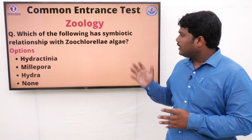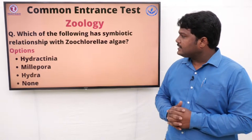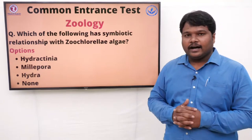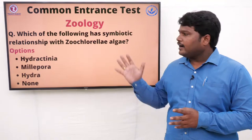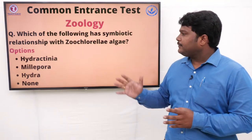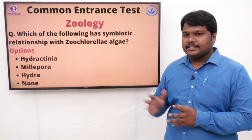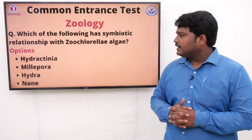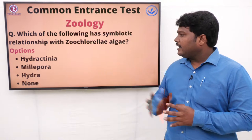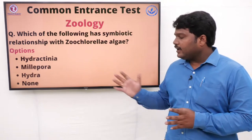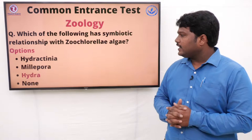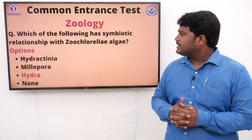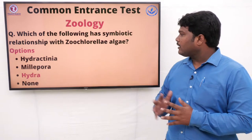Question 12: Which of the following has a symbiotic relationship with Zoochlorella algae? Options: A) Hydractinia, B) Millepora, C) Hydra, D) None. The right answer is Hydra. Hydra has a symbiotic relationship with Zoochlorella algae.